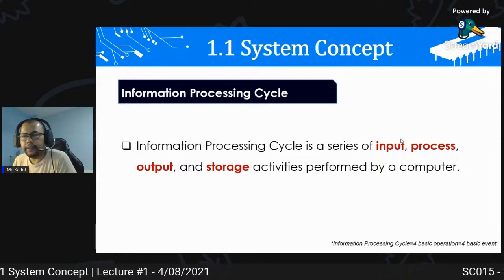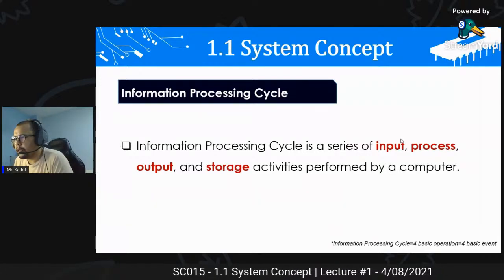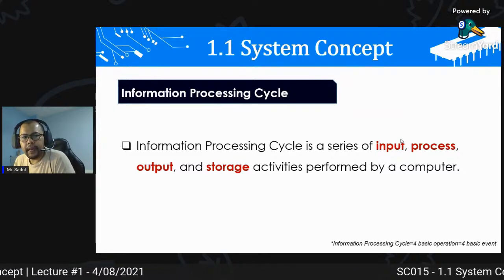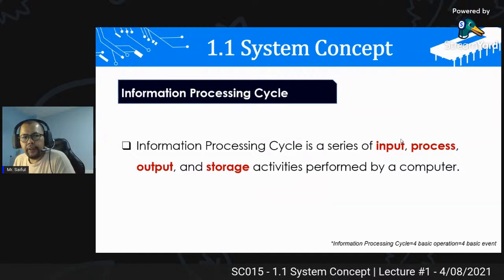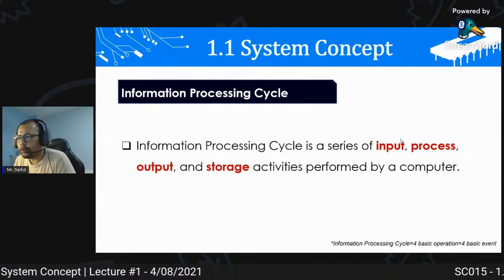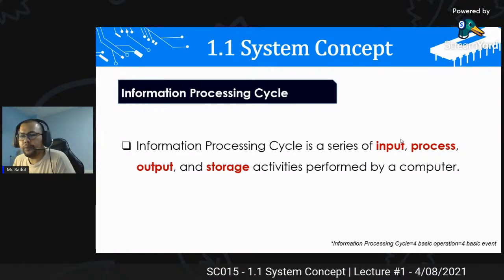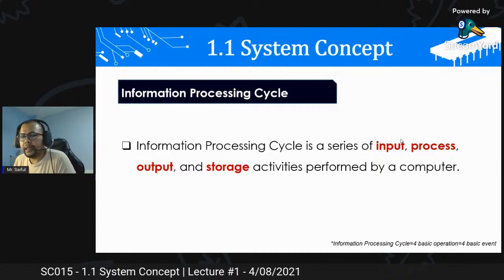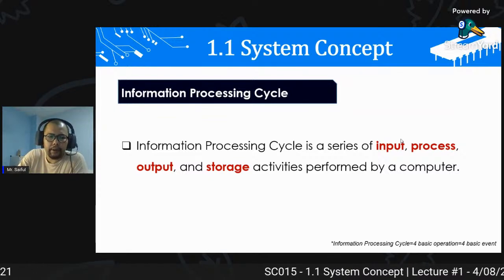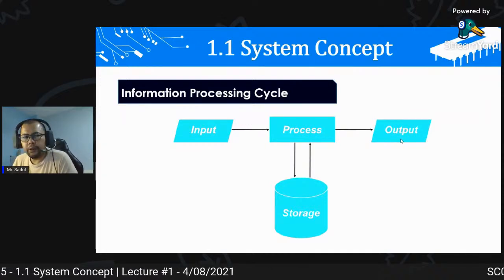Selanjutnya information processing cycle. Proses utama dalam komputer kita sebut sebagai information processing cycle atau IPOS cycle. Dia adalah satu series of activity - beberapa activity yang komputer buat dalam satu kitaran. Bentuk cycle dia: input, process, output, storage. Benda ni akan berlaku berulang kali dalam komputer dan disebut sebagai IPOS cycle.